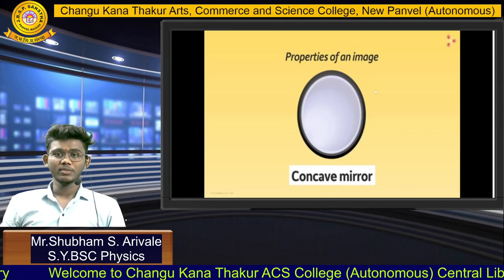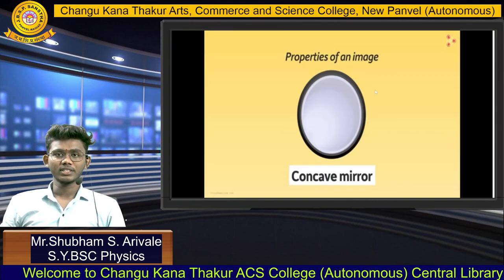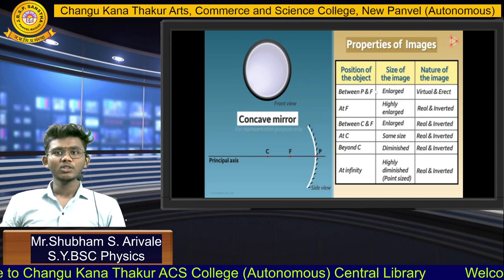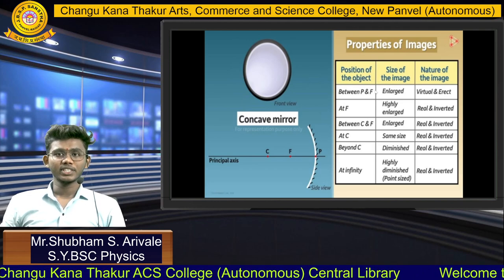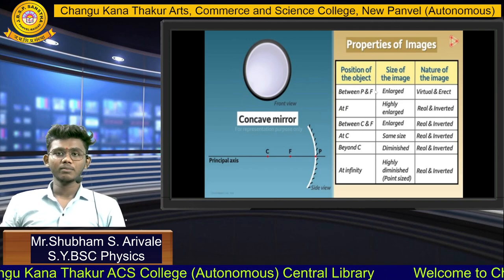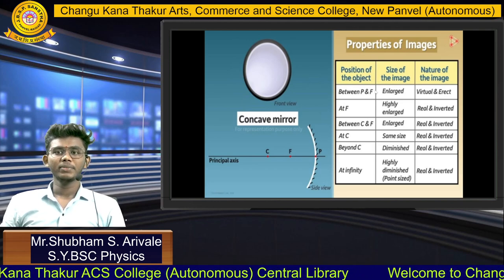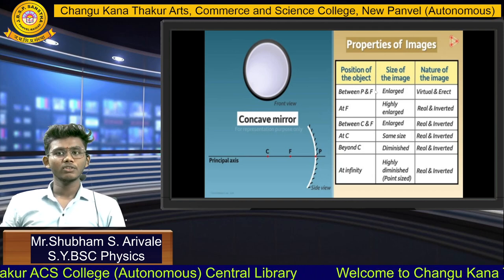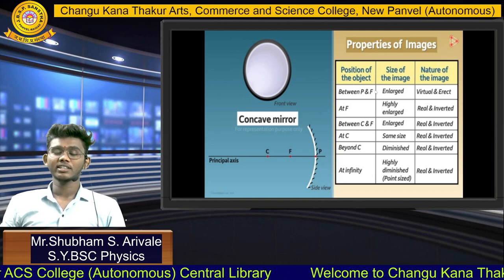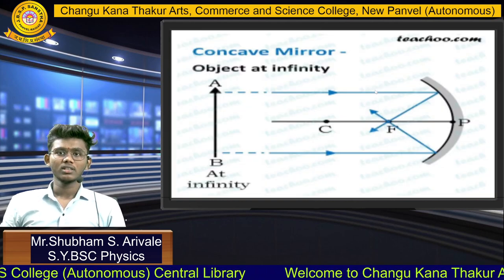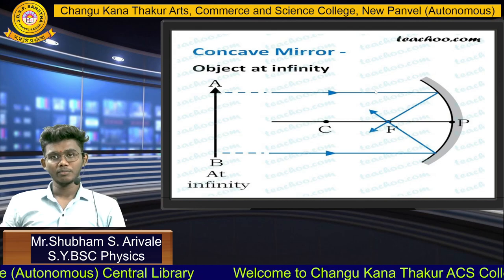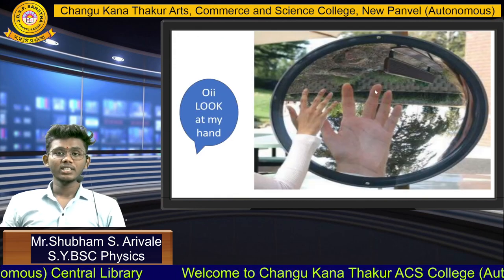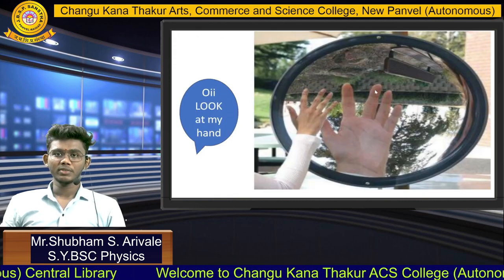Properties of image of Concave Mirror: the nature of an image depends on the position of the object. For example, when the object is between P and F, the nature of the image is virtual and erect, and so on. Simple ray diagram for a Concave Mirror. Let's take one example of Concave Mirror.